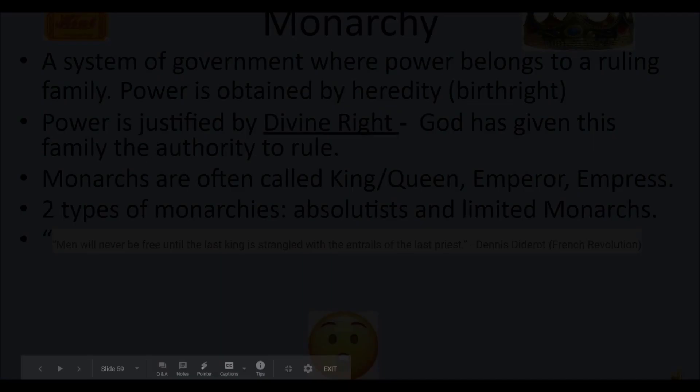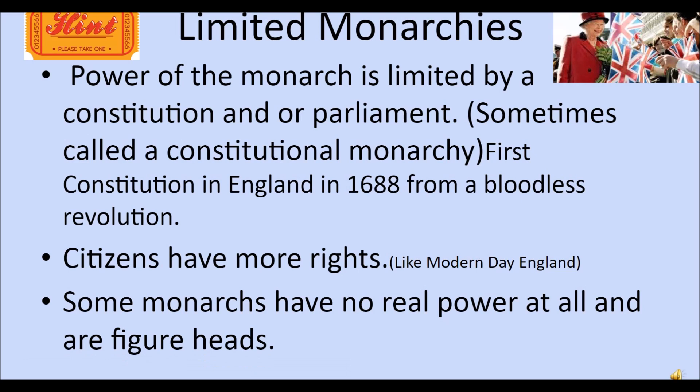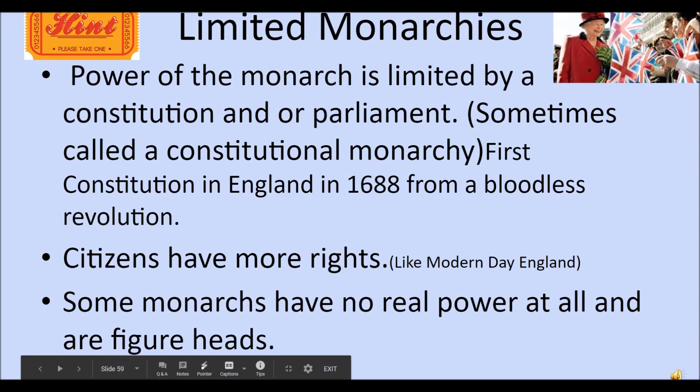Limited monarchies — now he was going through a lot there in France. The power of the monarch is limited by a constitution or a parliament. Modern Britain and the United Kingdom could be examples. The first constitution in England was written in 1688 from a bloodless revolution, giving citizens more rights than absolute monarchies. Some monarchs have no real power at all, like the queen, who is just kind of a figurehead. That doesn't sound like the worst situation — having power, strength, and money.